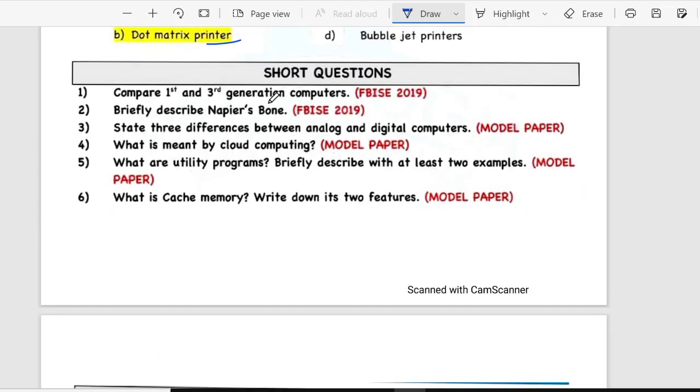In short questions you have to compare first and third generation computer. Number two, briefly describe Napier's bone. Number three is state three differences between analog and digital computer. Fourth is what is meant by cloud computing. Fifth is what are utility programs, describe at least two examples. Sixth is cache memory, write down its two features.